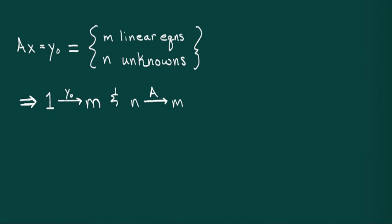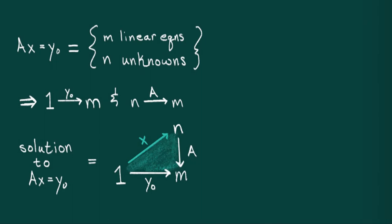Unraveling a bit of formalism should convince you that a solution to this equation is the data of a factorization of y0 through a. Here, we see that solutions to systems of linear equations are stored as compositions in this category.